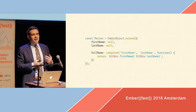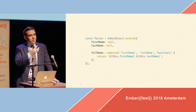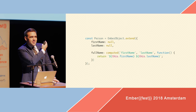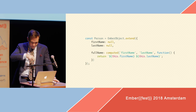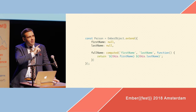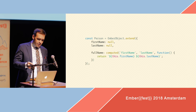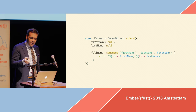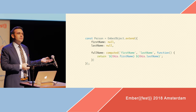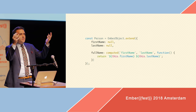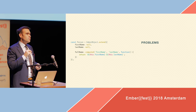To understand the benefit of tracked properties, we need to compare to something many of you have seen before — this example has been in the documentation since about 2008 because it was the SproutCore example. This is a classic computed property where we define a person class and a computed property called fullName. Whenever firstName or lastName changes, we want to recompute fullName and if it's being used in a template, make sure the DOM stays up to date.